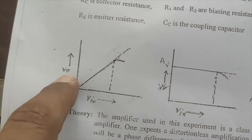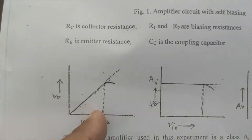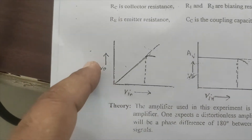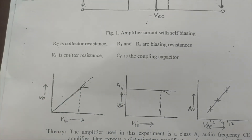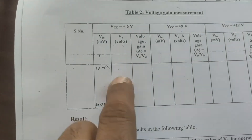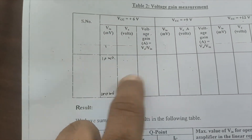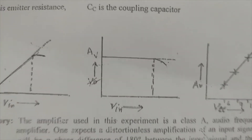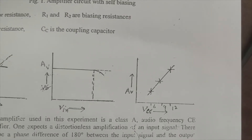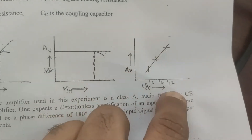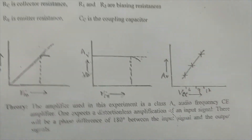Once all observations are recorded, we plot three graphs: first, Vout versus Vin; second, input voltage versus voltage gain; and third, voltage gain versus VCC for values of 6V, 9V, and 12V. These plots allow us to analyze the amplifier's behavior across different supply voltages.